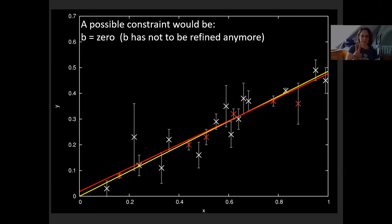However, a constraint assumption has to be absolutely certain, because if it is wrong, you would never recover from it. If the function doesn't necessarily go through zero and you haven't refined this parameter — you've just set it to a fixed value — the model is going to be wrong because you had a wrong underlying assumption.